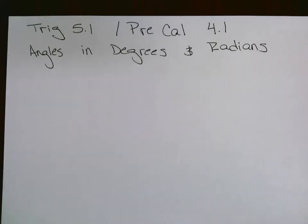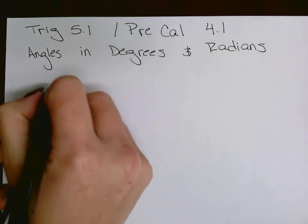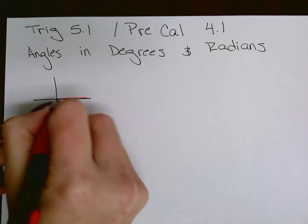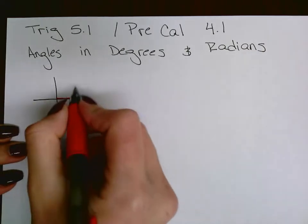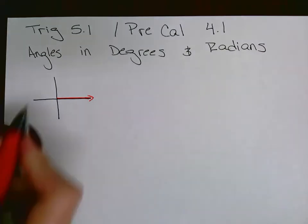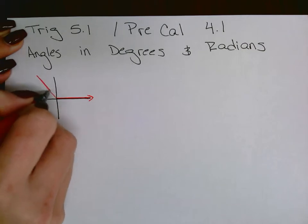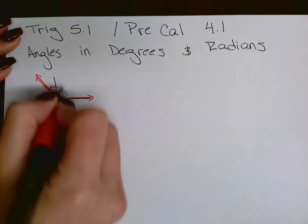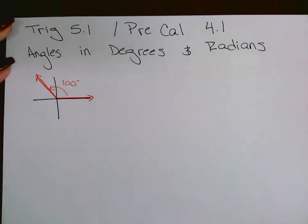All right, for trig this is section 5.1 and for pre-calc this is 4.1 — this is angles in degrees and radians. Slide 2 gives you an image you might have seen in geometry. The right side is where we always start drawing our angle; this is called the initial side. If I want to draw 100 degrees — just past 90 — I go counterclockwise to what's called the terminal side.